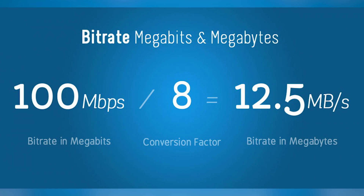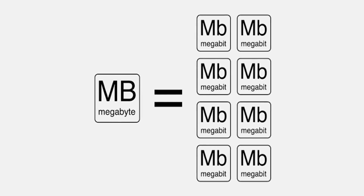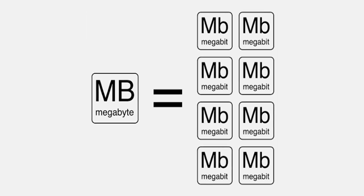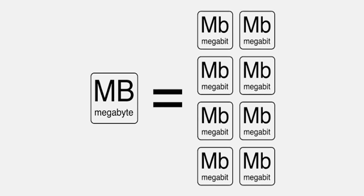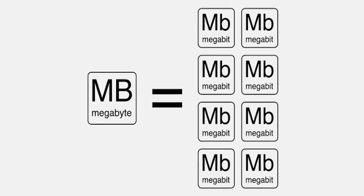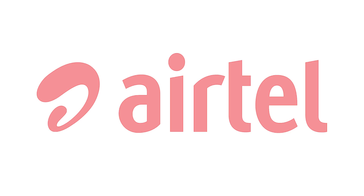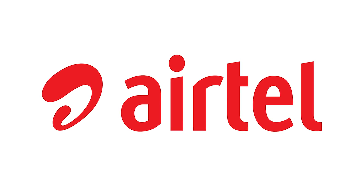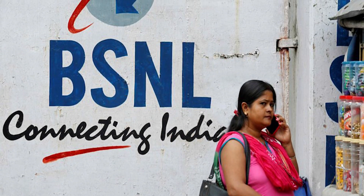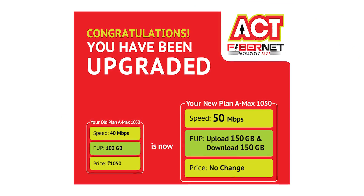So how do you differentiate between the two? Megabyte is all-caps MB, and a megabit has a lowercase b, making it Mb. This is a sneaky little thing that ISPs do and they've been doing it since the beginning of time. There is nothing you can do about it, but if you've ever wondered why your internet speed isn't as advertised, well, this is why.